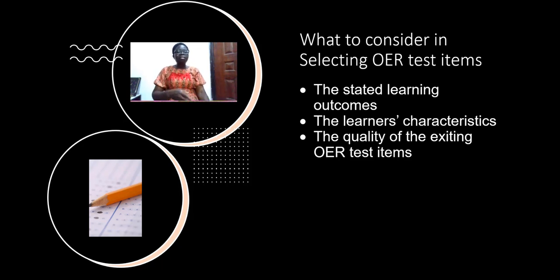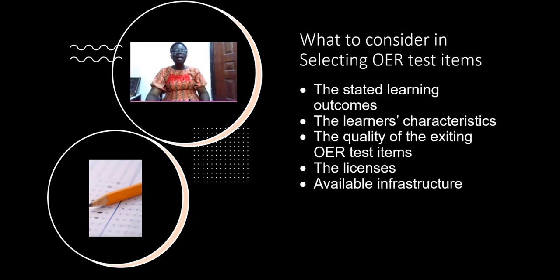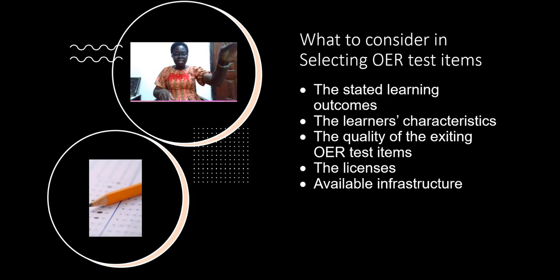You need to look at the learner's ability — there are many characteristics to consider. Then the license: you must look at the license because it will tell you the exact terms of use. Then the infrastructure — how available is the infrastructure you want to use? No matter how good a test item is, if the infrastructure in your environment does not suit it, there is no way it will fit in.